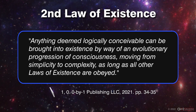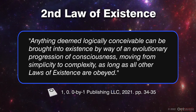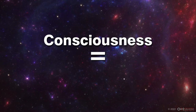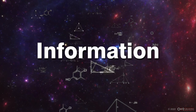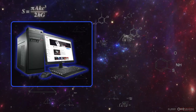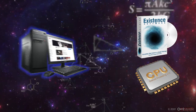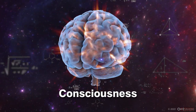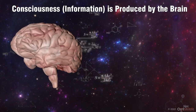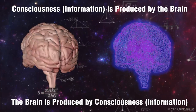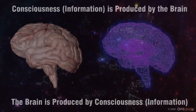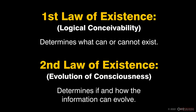Second law of existence: anything deemed logically conceivable can be brought into existence by way of an evolutionary progression of consciousness, moving from simplicity to complexity, as long as all other laws of existence are obeyed. Within this law, consciousness is synonymous with information. Since everything that exists is comprised of information, then as long as this information can be communicated, it can also evolve. An example would be a modern desktop computer — software is the data, and the CPU processes the data. Combine the two and you have consciousness at the fundamental level. You're correct that consciousness is produced by the brain, but it's incorrect to think that the same information generating and processing hasn't been going on since the beginning of existence. Brains are just a more highly evolved animated recreation of an earlier inanimate process.